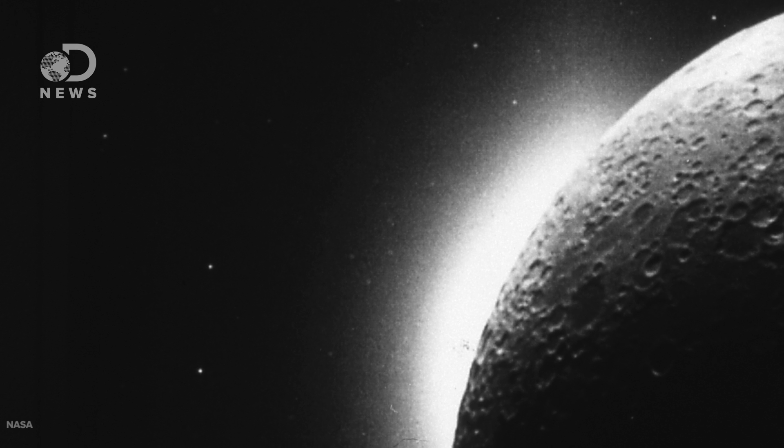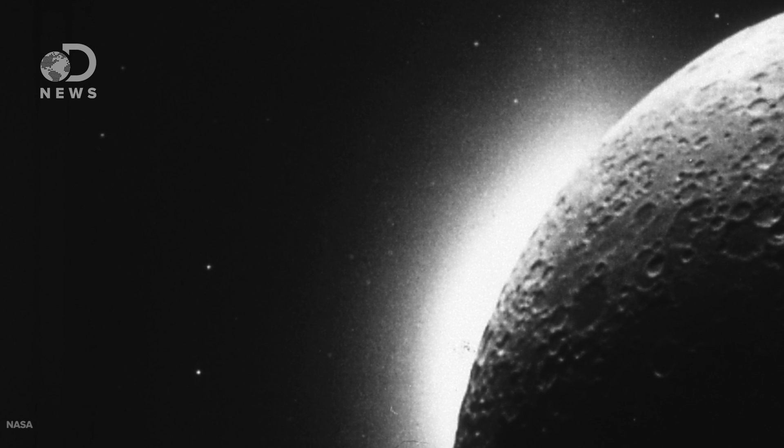Is it really made of cheese? Are there really transformers on the dark side? Why is there a strange glow on its horizon? Well while those first two questions might forever remain a mystery, a recent study from NASA may have just found an explanation for the moon's weird glow.